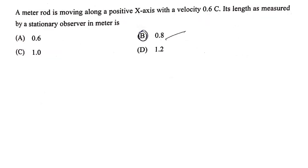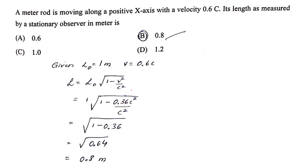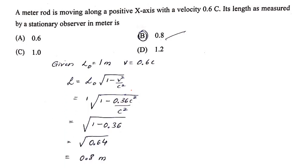Next question: a metre rod is moving along the positive x-axis with velocity 0.6c. Its length as measured by a stationary observer is? Given L₀ = 1 m and v = 0.6c, using L = L₀√(1−v²/c²), we substitute and simplify to get L = 0.8 metres.